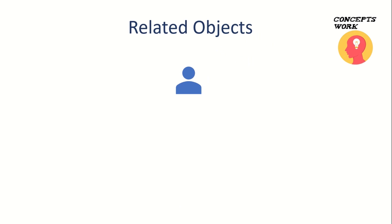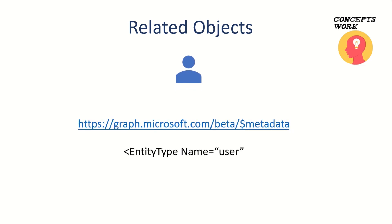Now the next thing — how to check the related objects list — is exceptionally important to understand and is the most important part of this video. Let's go deep into understanding how the metadata works. Similar to ADFS federation metadata and Azure AD federation metadata, there is a metadata for Microsoft Graph, and it can be accessed at graph.microsoft.com forward slash the API version forward slash metadata. All you have to do is go to that link and search for 'EntityType Name equals User'.